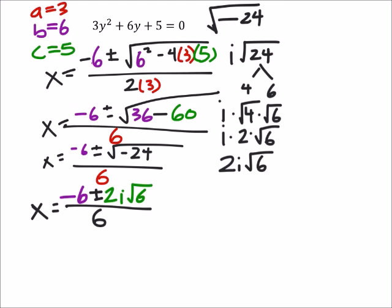So, as it turns out, on the test there would be a few different ways to write this. I want to say on the homework, I don't know if they'll accept this many ways. But here's the first thing I would be looking to do. I'm going to split this up into two separate fractions. So, I'd have negative 6 over 6 plus or minus 2i times the square root of 6 over 6.